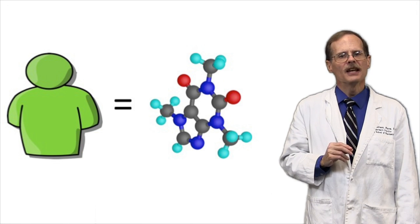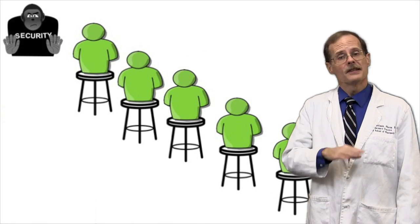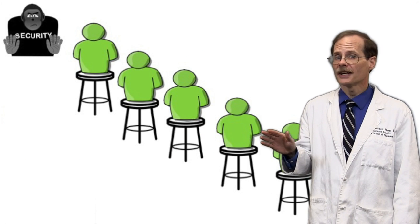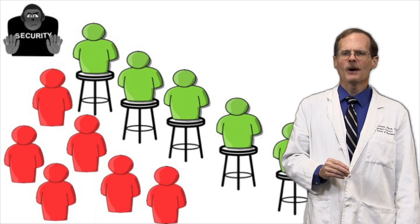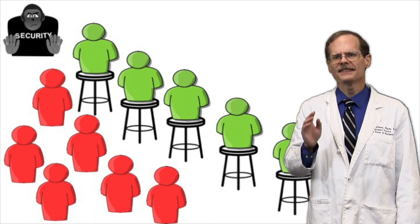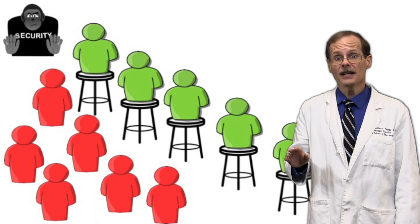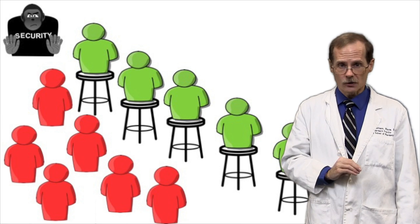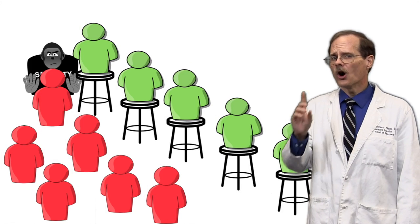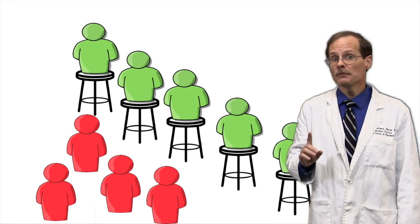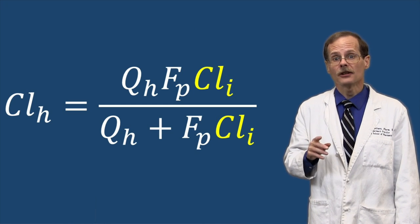In this analogy, the people in the bar are drug molecules. Some of them are sitting on stools buying drinks and are thus bound. The bouncers leave them alone. However, there's only so many seats available and everyone else is wandering around free. These are the unbound drug molecules. The bouncer can only clear out so many people at a time. The bouncer represents the liver's intrinsic clearance.